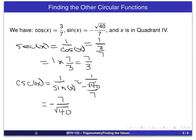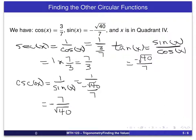And now we go after tangent and cotangent. And again, the tangent function is sine over cosine. And again, we have a little work to do with fractions. The sine is minus square root of 40 over 7. Cosine is 3/7. So again, we invert and multiply. And we end up, as we can see, the sevens will cancel and we end up with minus the square root of 40 over 3.